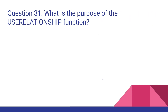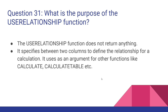Next question: what is the purpose of the USERELATIONSHIP function? The USERELATIONSHIP function does not return anything. It specifies the relationship between two columns to define it for a calculation, and it is used as an argument for other functions like CALCULATE and CALCULATETABLE. Before going to the interview, practice some examples of how to use this function — you can find examples on my YouTube channel.